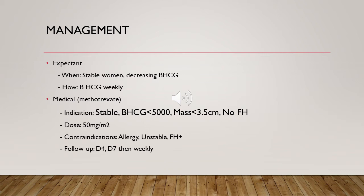For medical management, the patient should have no significant pain, it should be an unruptured tubal ectopic pregnancy, mass less than 35 mm with no visible fetal heart on transvaginal scan, beta-hCG less than 1500 — though we can consider medical treatment with values up to 5000. The patient should not have an intrauterine pregnancy and should be compliant with follow-up. Beta-hCG is done on day four, then day seven, then weekly. There must be a drop of at least 15 percent between day four and day seven; if not, consider another dose of methotrexate or surgical option. No anti-D is needed with medical management.